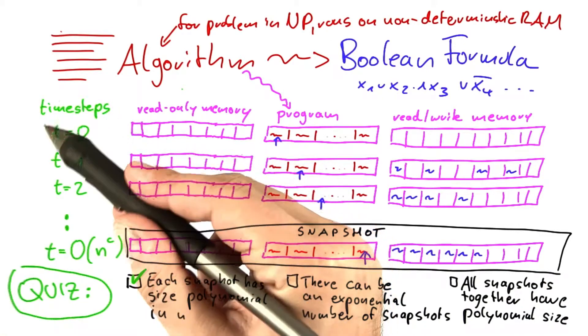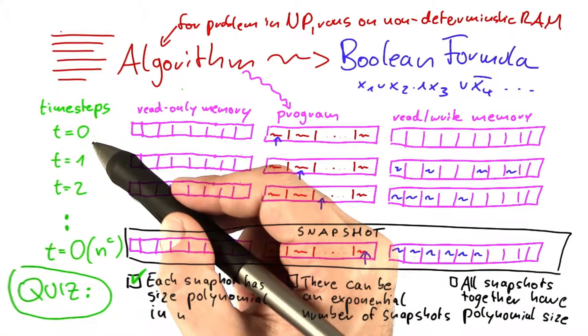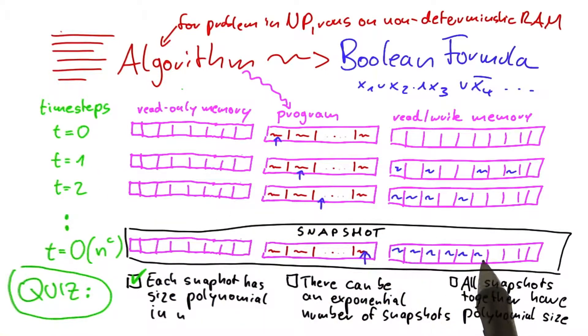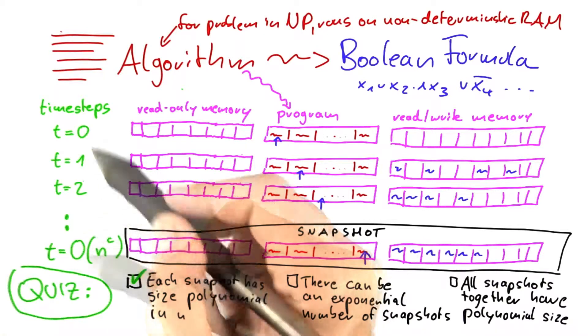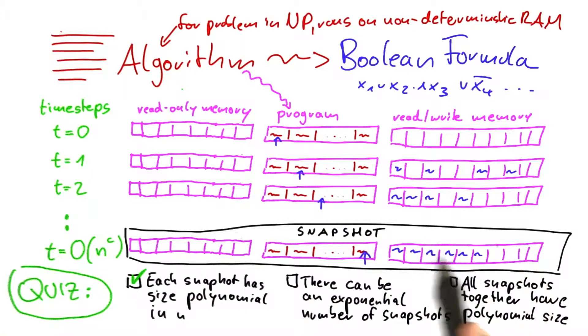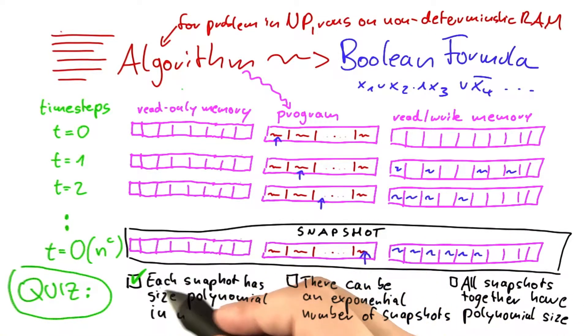And in each time step, it can only modify a constant amount of variables. So the total memory that it needs is some constant times the number of time steps. And since the number of time steps is a polynomial of n, the total space required here for the memory is also a polynomial of n. So you have a polynomial of n plus some constant plus a polynomial of n. So each single snapshot has size polynomial in n.